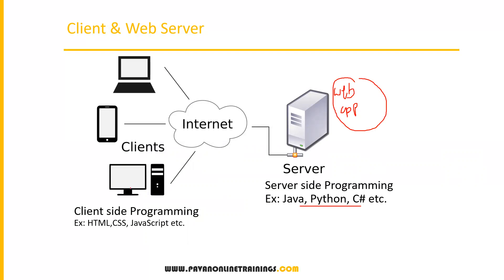On the client side, every client machine has a browser. Through the browser, we access web applications, and the browser interprets and presents data to the user. To interpret and represent data on the client side, we write client-side programming using HTML, CSS, and JavaScript. So the web server is where web apps are installed, clients access them via browser, and we have server-side programming on the server and client-side programming on the client.